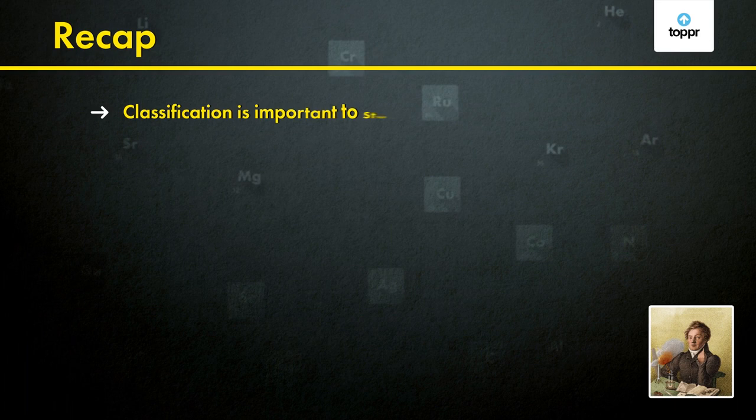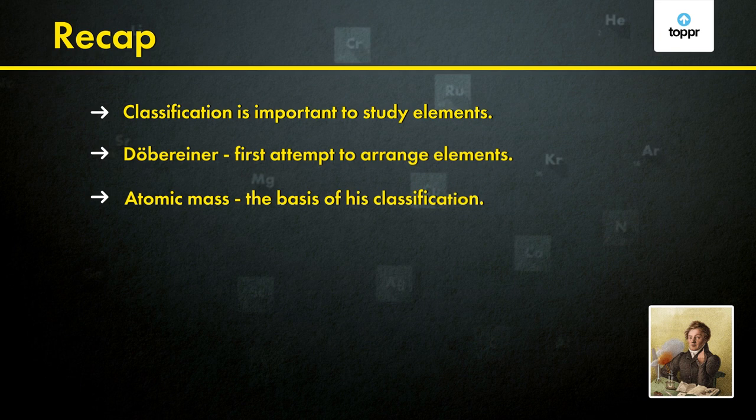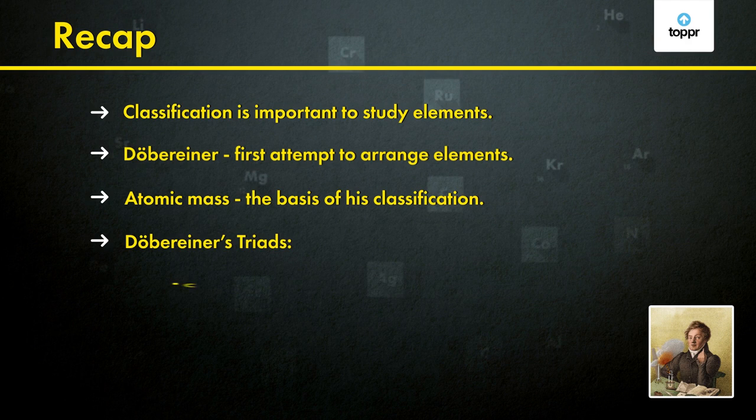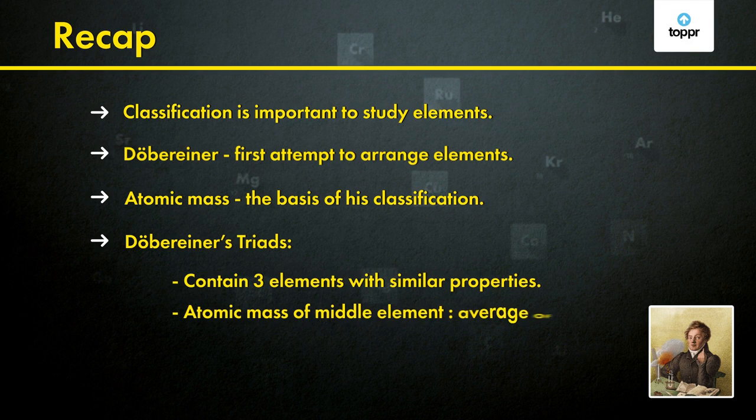Let's quickly recap what we've learned in this video. Classification is important to study elements. The German chemist Döbereiner made the first attempt to arrange elements, using atomic mass as the basis of his classification. Döbereiner's triads contain three elements with similar properties, and the atomic mass of the middle element is roughly the average of the other two. Limitation: only three triads could be formed out of 25 known elements.